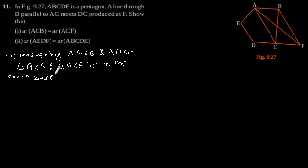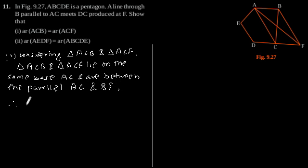That is AC and are between the same parallels, that is AC and BF. Therefore, we can say that area of triangle ACB is equal to area of triangle ACF, as proved. Now second part.